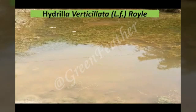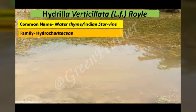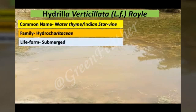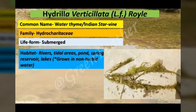Hydrilla verticillata, commonly known as water thyme or Indian starvine, is a submerged rooted aquatic plant. It can survive up to a depth of 40 feet in non-turbid water. It can be found in a variety of aquatic habitats such as reservoirs, lakes, ponds, rivers, springs, and tidal zones, and can tolerate a wide range of water conditions from low to high nutrient concentrations.